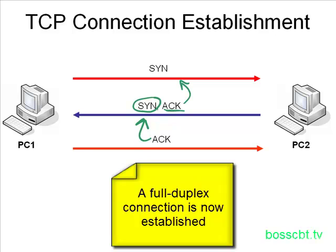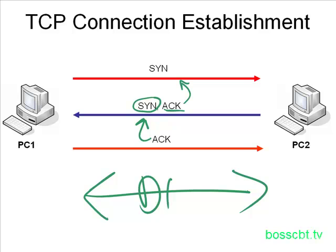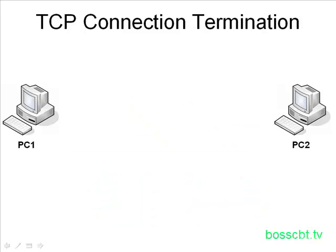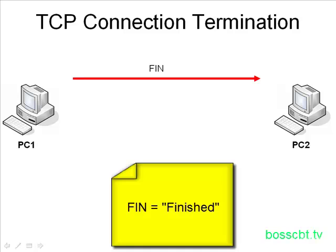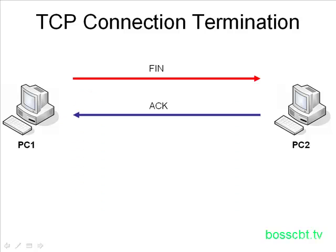Now let's assume they've both sent a lot of data to each other and want to tear down the connection — for example, I'm done looking at a web page and I close my browser. We have three steps in establishment but actually four steps in termination. It begins with PC1 sending a FIN — which stands for finished — message to PC2, meaning: I'm not going to be sending you any more data and I'm closing my session. PC2, when it receives the FIN, immediately responds with an ACK, letting PC1 know it received the FIN.